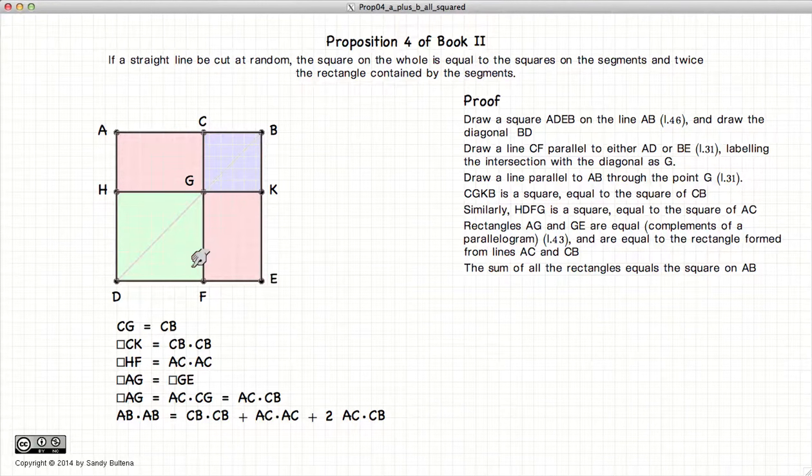Thus we have: this area equals CB squared, this area equals AC times CB, and this area equals AC times CB.